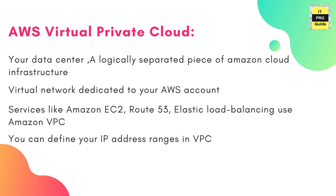If you want to spin up a virtual machine in Amazon Web Services, or use Route 53 or Elastic Load Balancing, all these services use the Virtual Private Cloud. A VPC is something you have to plan first in AWS, and it is where you define your IP address ranges.